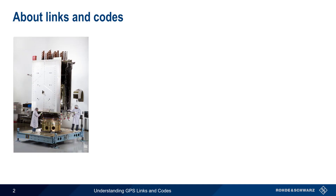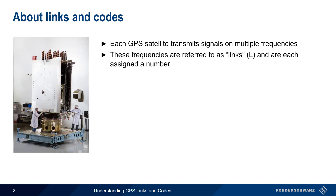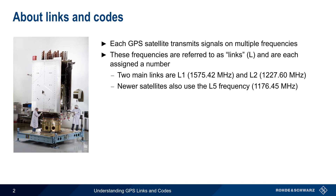Let's start with a brief explanation of what we mean by links and codes. Every GPS satellite transmits multiple signals on multiple frequencies. These different frequencies are referred to as links, abbreviated L, and each link has a different number. The two main links are L1 at 1575.42 MHz and L2 at 1227.6 MHz. Newer GPS satellites also transmit on the L5 link, or 1176.45 MHz. On each link, multiple codes are sent.